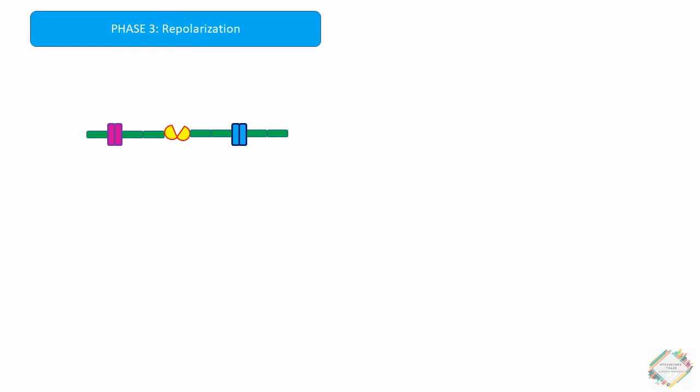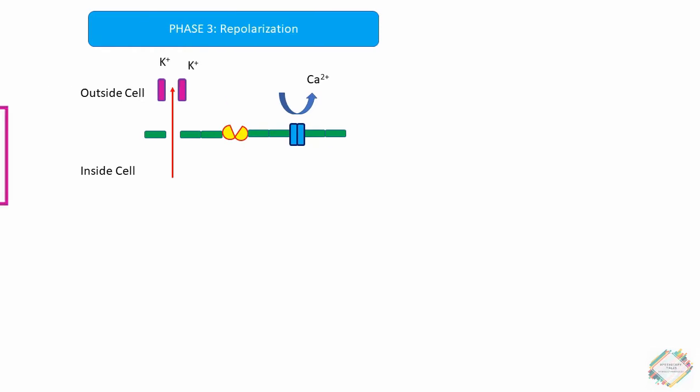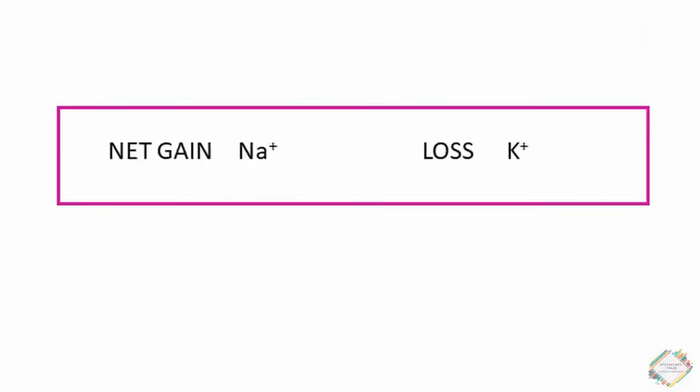During phase 3, repolarization, the calcium channels close and the potassium channels open, resulting in an outward current that leads to membrane repolarization. The net result at this point is a net gain of sodium and loss of potassium.